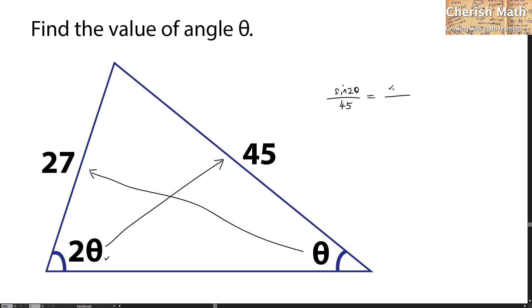Now I'm going to expand sine 2 theta by using the double angle formula. That would be 2 sine theta cos theta over 45 equals sine theta over 27. Sine theta, we can simplify it.